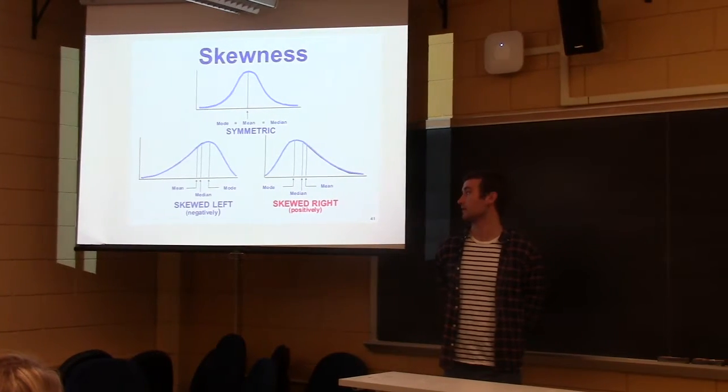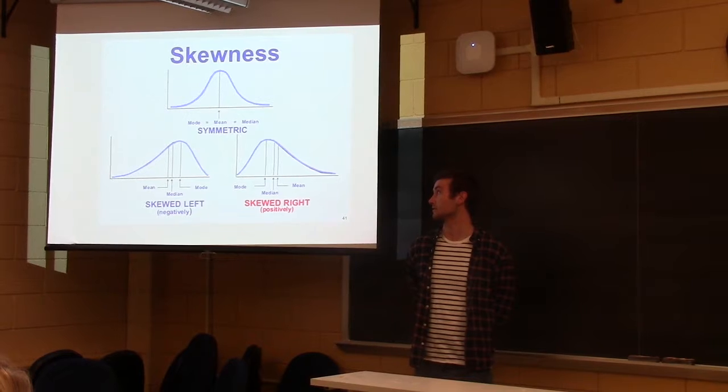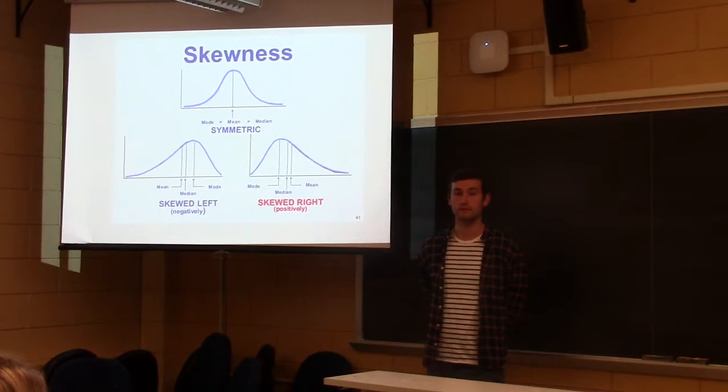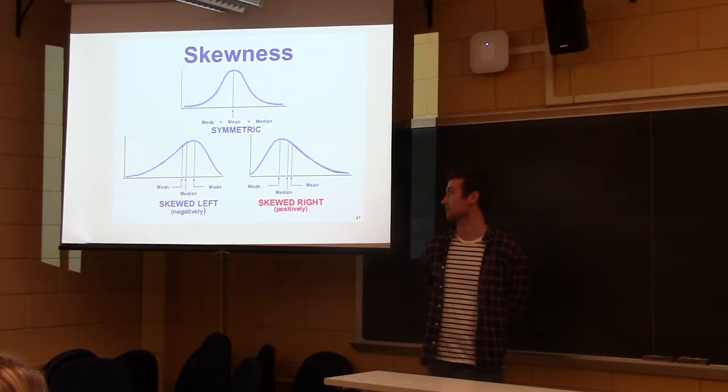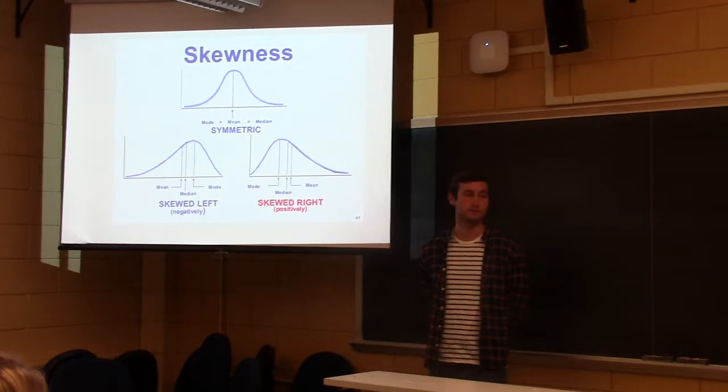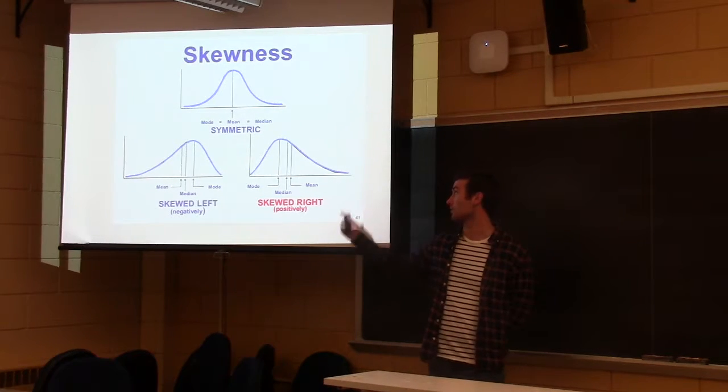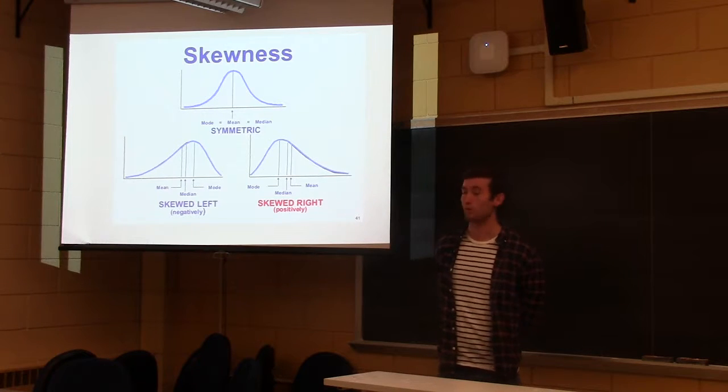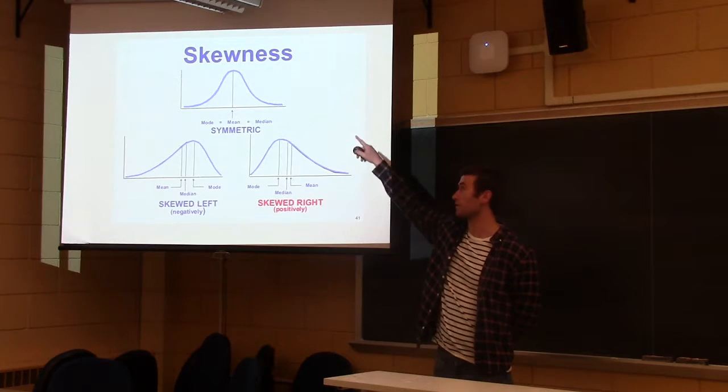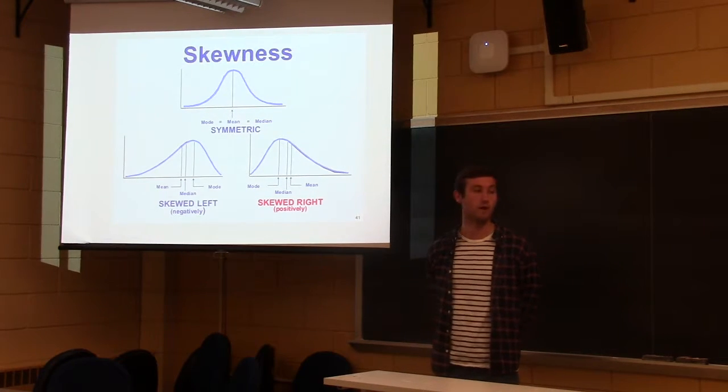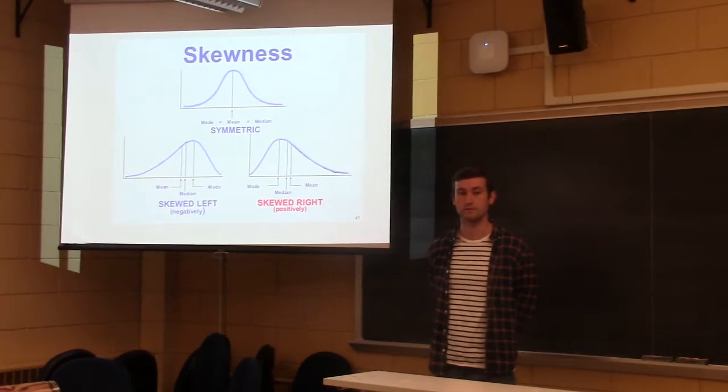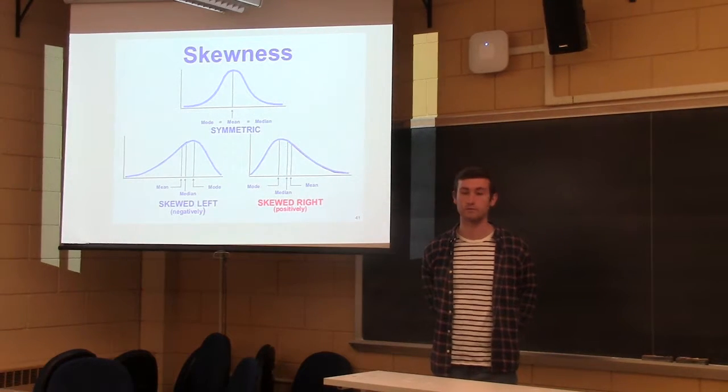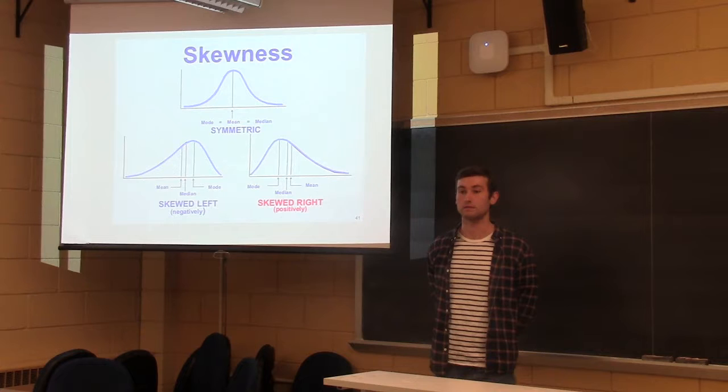And right skew, the mean is to the right of the median in the distribution. You can also see it's called positive skew because there's a lot of positive outliers or large outliers. And then normal distribution would be that double curve shape up there. That's what we want our distribution to look like. That's what the assumptions for linear regression state that we need.